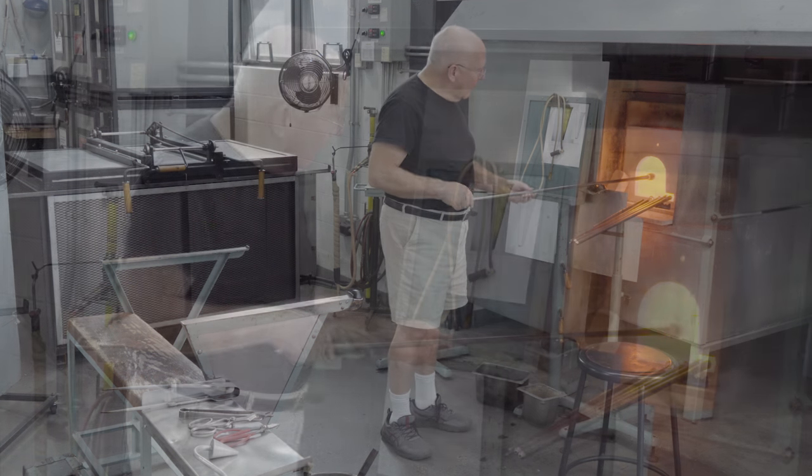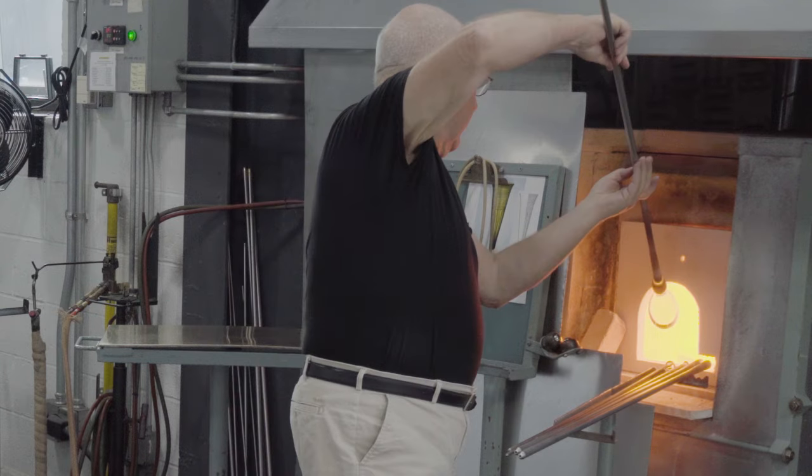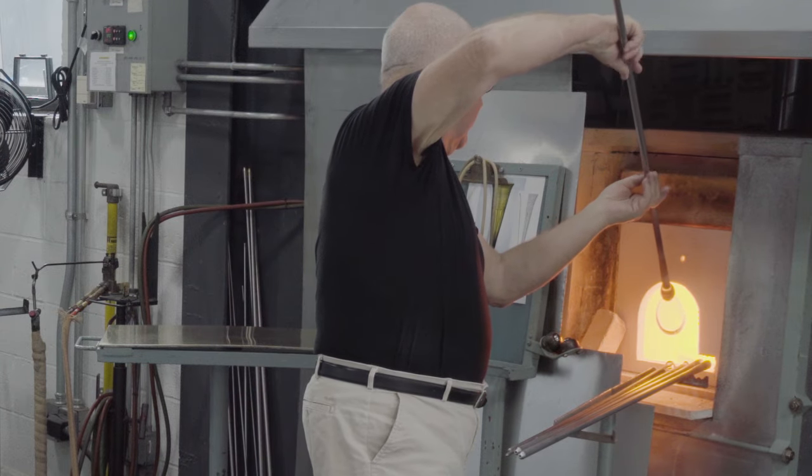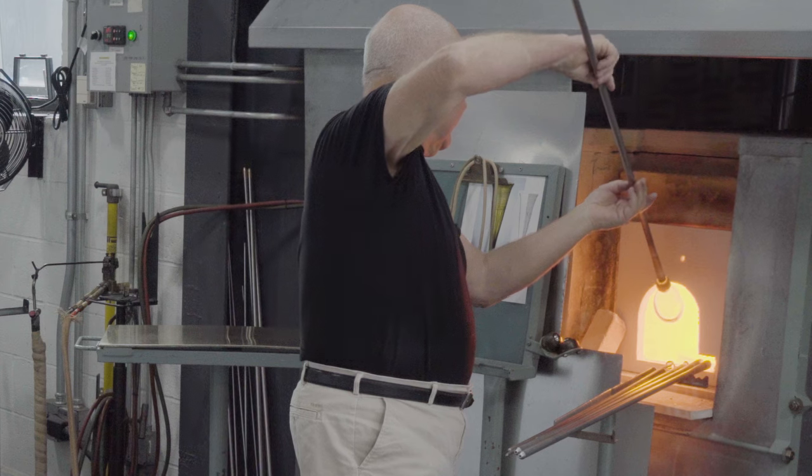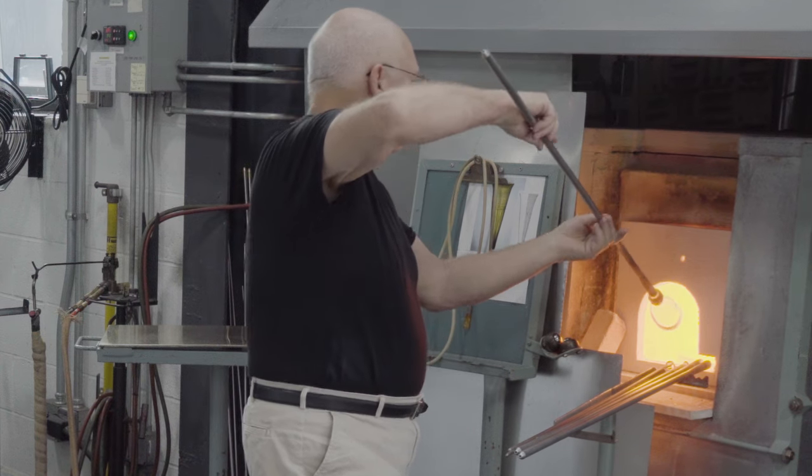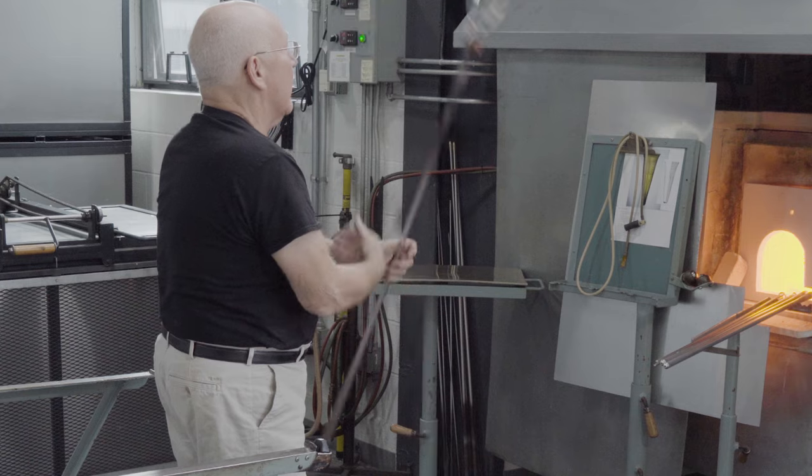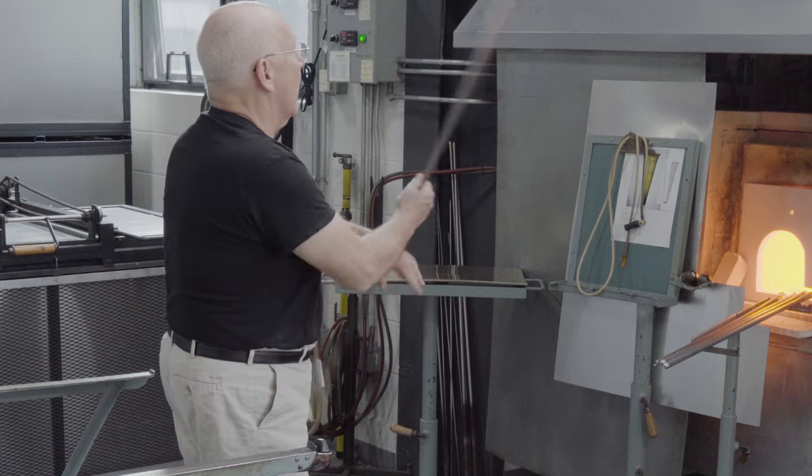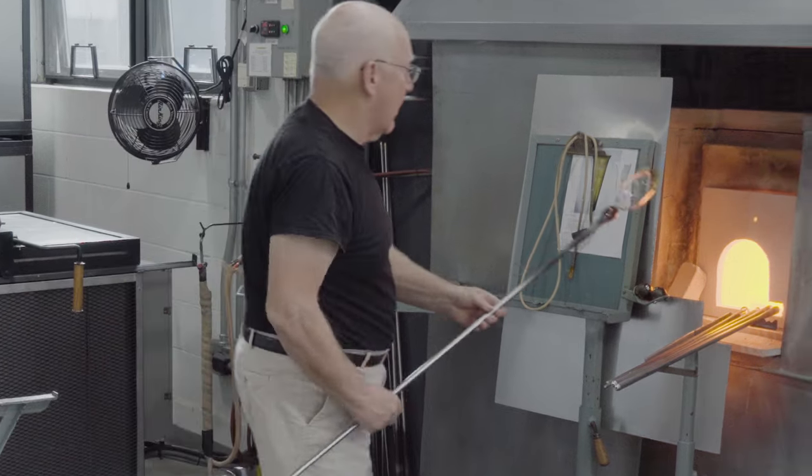The glass is reheated. The bubble is blown larger. The blowpipe is held downward to cause gravity to elongate the bubble. Occasionally it's spun for the centripetal force to further elongate the bubble.